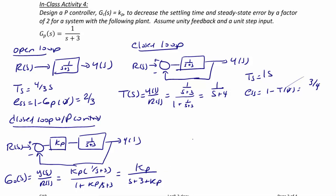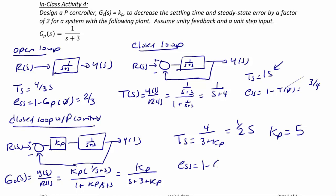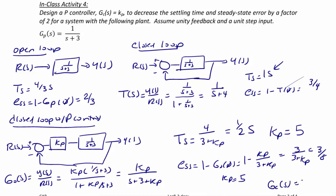First let's design for the settling time. The settling time equals 4 over 3 plus KP. Since we want to improve this by a factor of two, we want to go from 1 second to half a second. Solving for KP, we get KP must equal 5. For the steady state error, ESS equals 1 minus G0(0), or 1 minus KP over 3 plus KP, which equals 3 over 3 plus KP. Improving the steady state error by a factor of two gives 3 eighths, and we again get KP equals 5. So the designed controller is GC(S) equals 5.